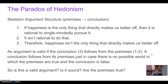If we accept Premise 2, we have to conclude that happiness isn't the only thing that directly makes us better off. This is a simple argument form: Premise 1 is 'if P then Q,' Premise 2 is 'not Q,' so we must conclude 'not P.' Therefore, happiness is not the only thing that directly makes us better off. Notice that Conclusion 3 is the denial of the basic thesis of hedonism. So if we accept the first two premises, it looks like we must reject the basic thesis of hedonism.